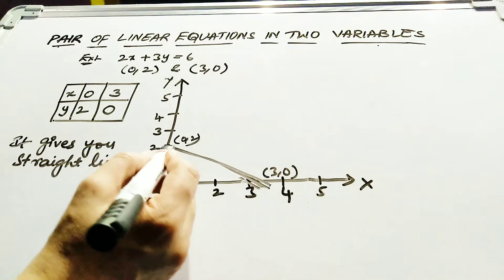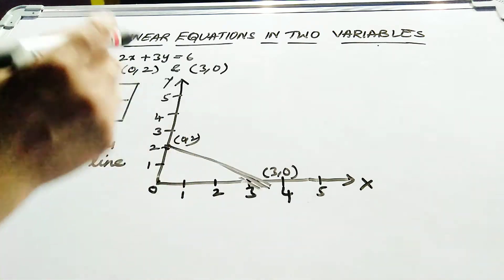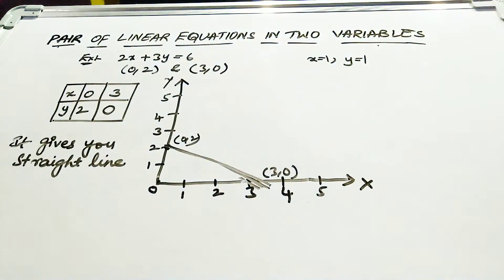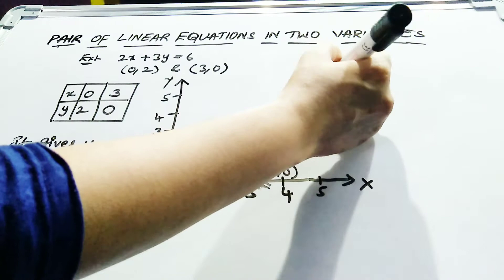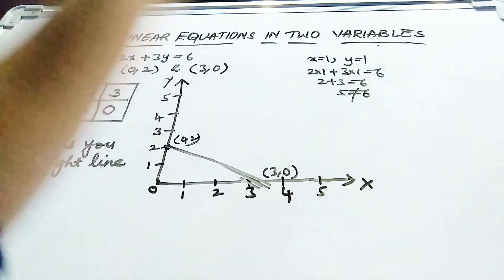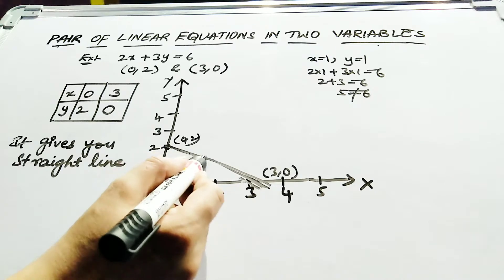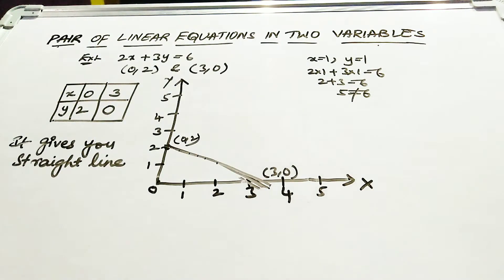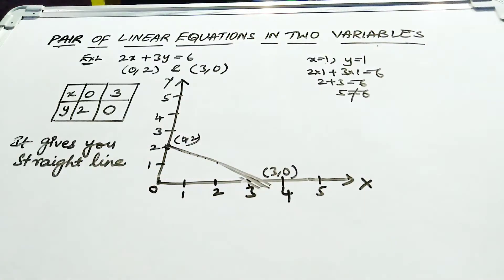On your straight line, however many points you see means that many solutions you get from the equation. For example, if x equals 1 and y equals 1, substitute into the equation: 2 times 1 plus 3 times 1 equals 6, which gives 5, not equal to 6. So it is not a solution and that point does not lie on the straight line. All solutions of an equation lie on the straight line.